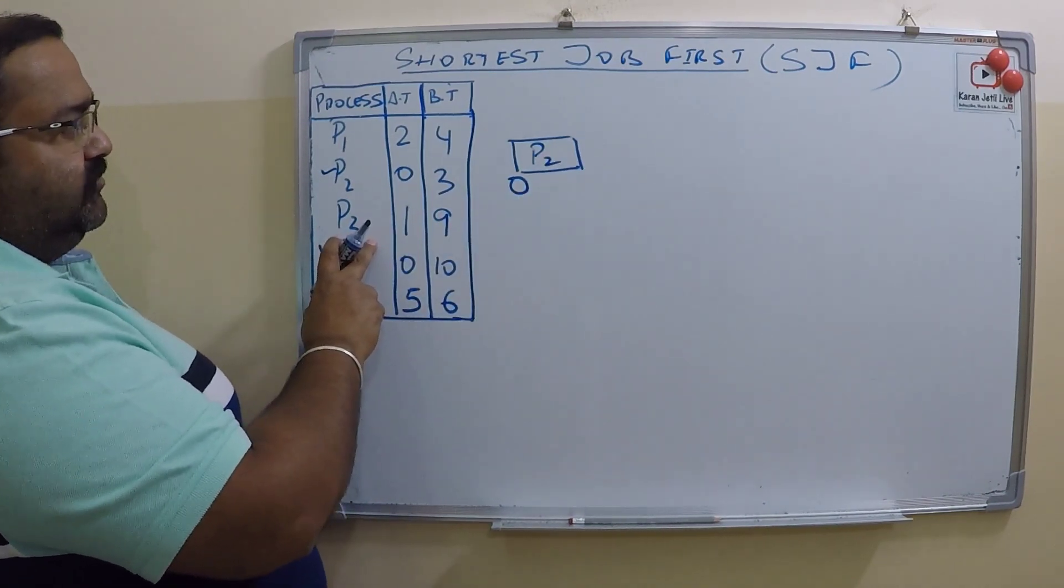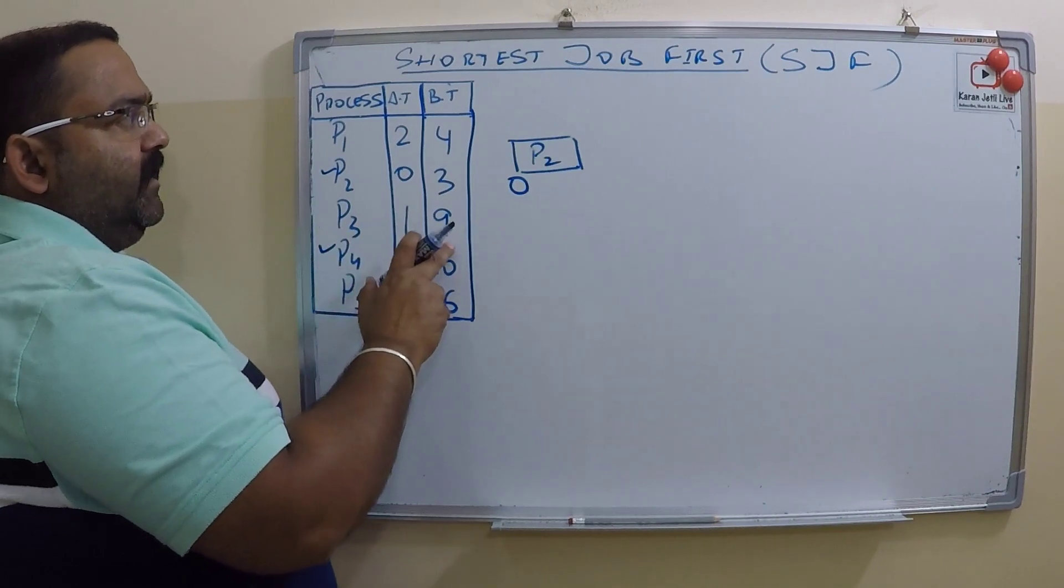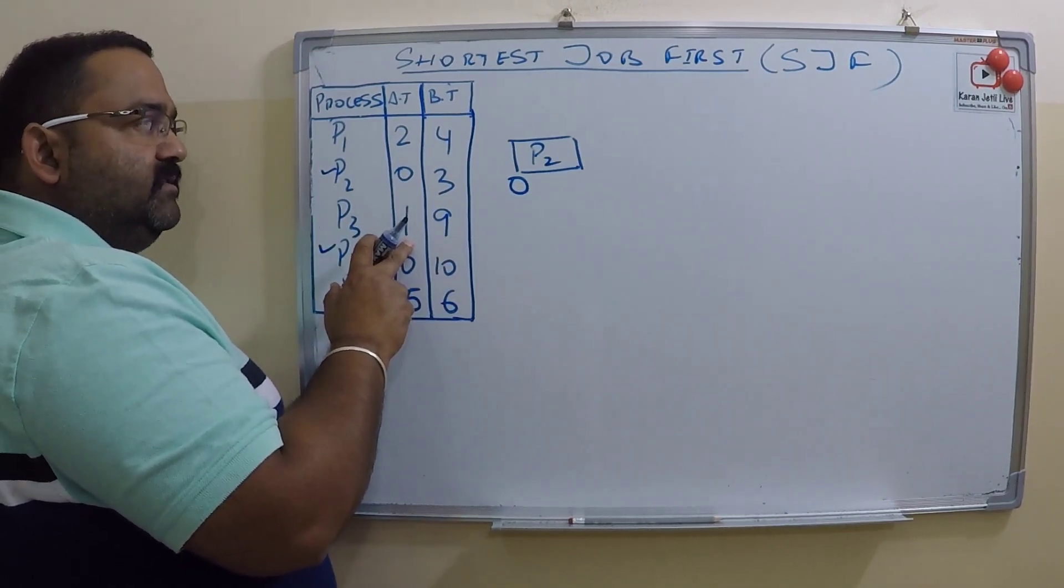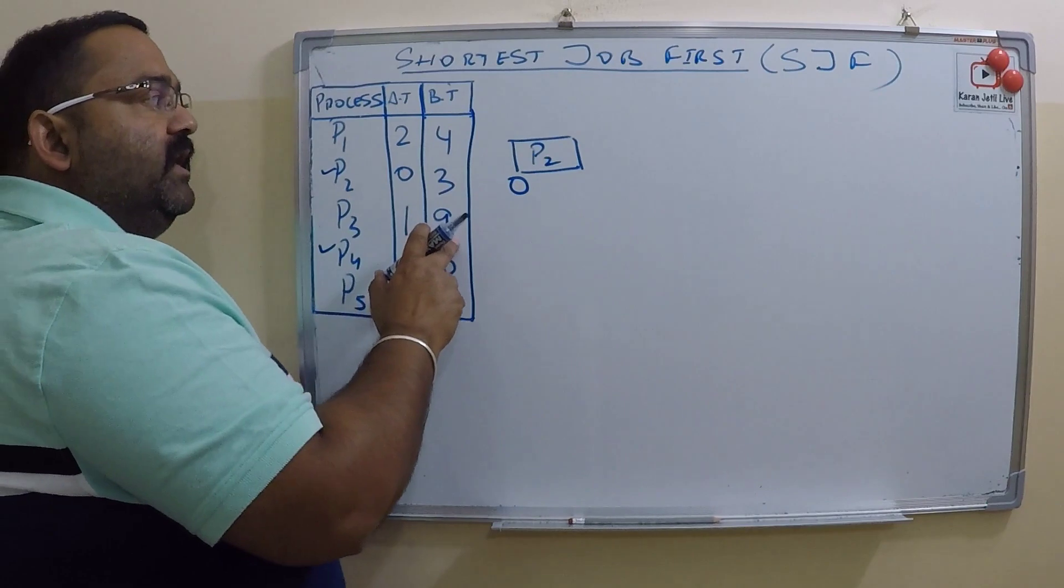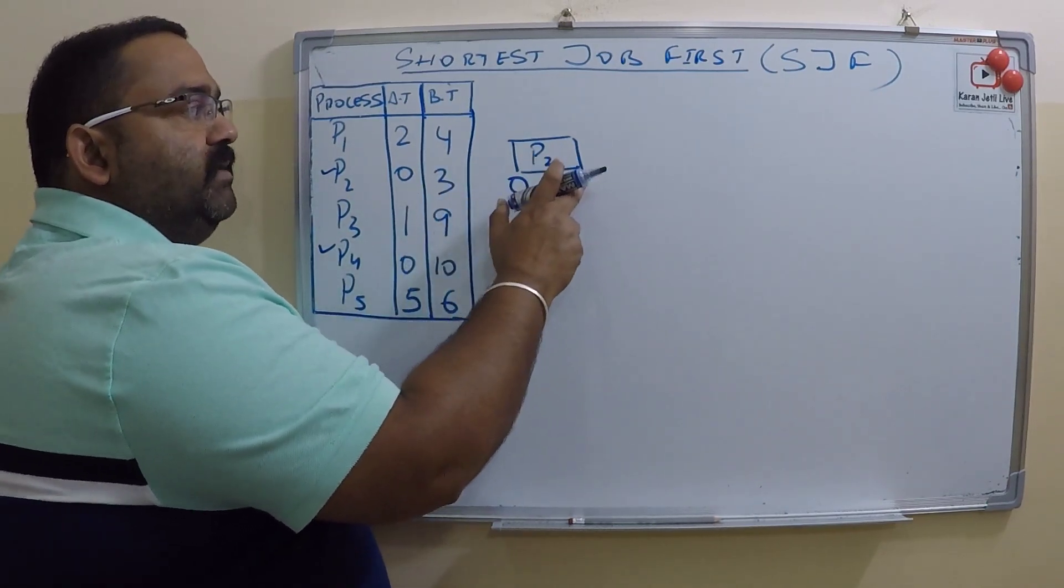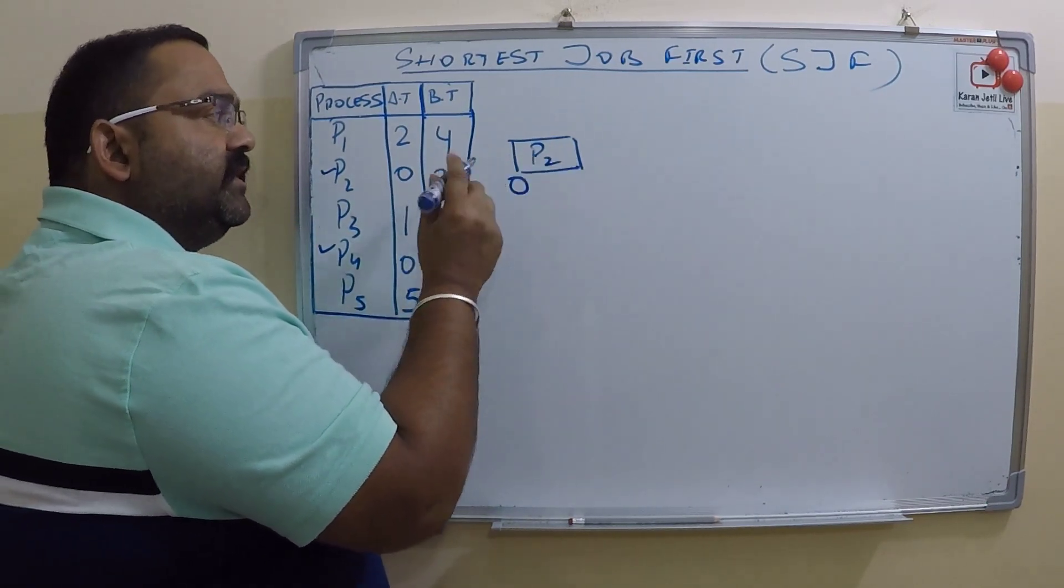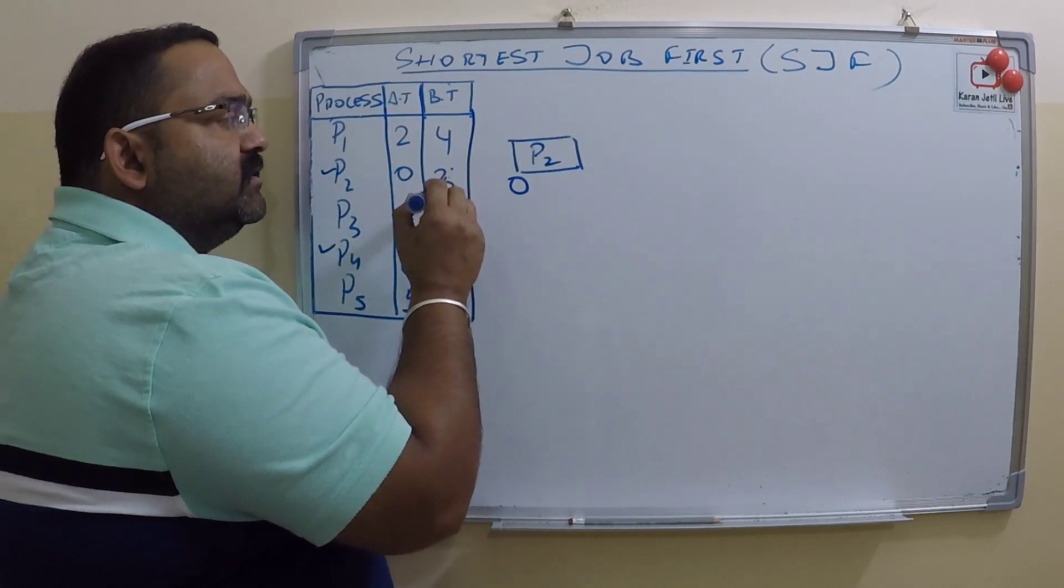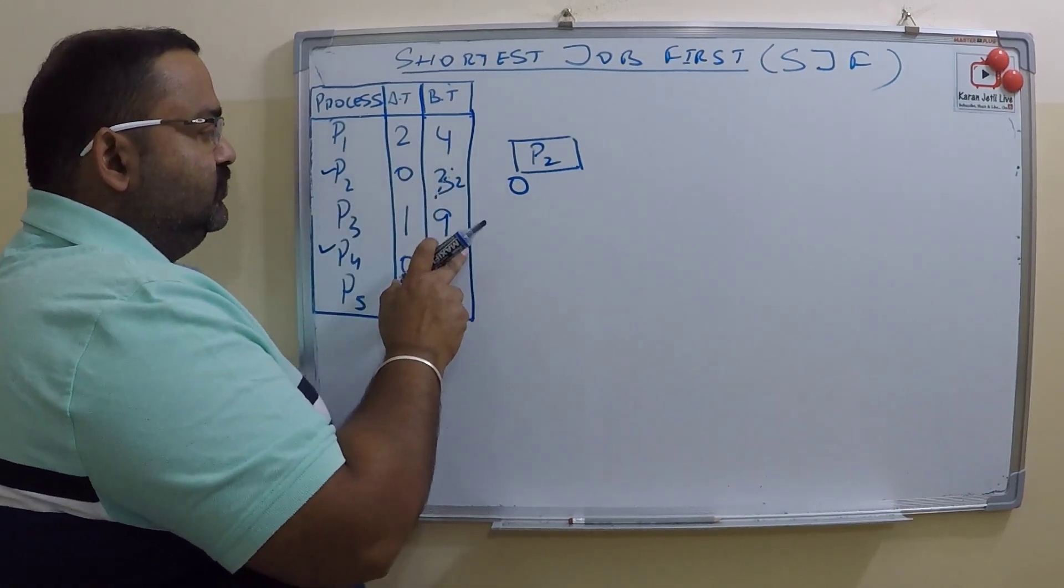Again CPU will compare. P2 has already completed one second, so how much burst is remaining? Time left is two seconds. So again it will compare - which is smaller? Again P2 is small.